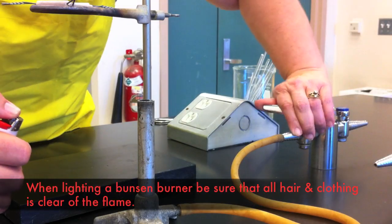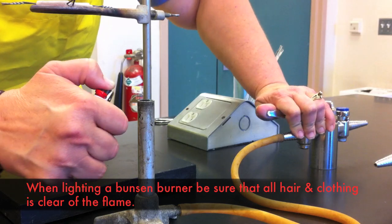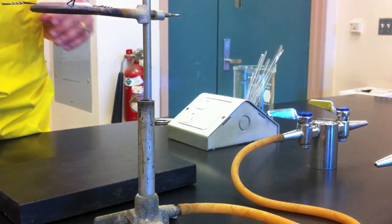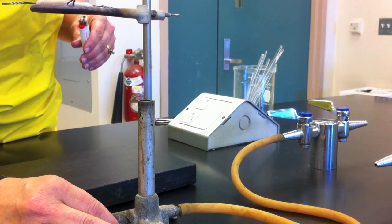When lighting a Bunsen burner, ensure that anything flammable such as hair or clothing is well out of the way. Turn on the gas flow and then bring a light, match or lighter towards the end of the Bunsen burner and it should ignite.